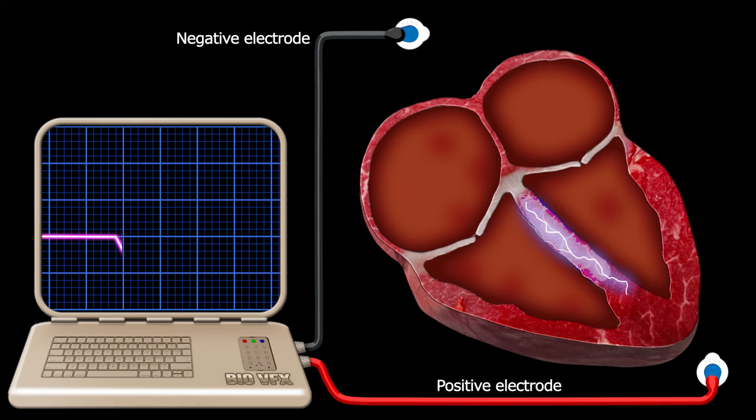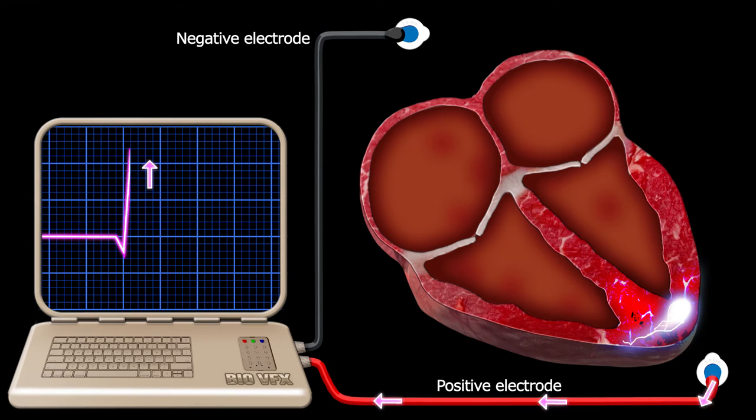Almost simultaneously with depolarization of the ventricular septum, the apex of the heart also goes through depolarization. But this current is again moving downward towards the positive ECG electrode and the ECG reflects it as an upward spike. This is the R wave.